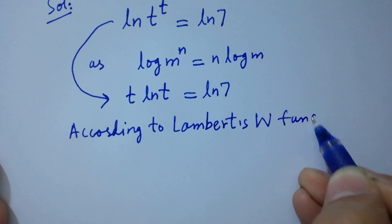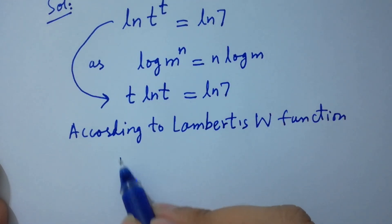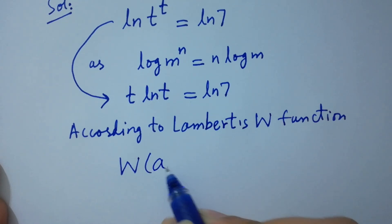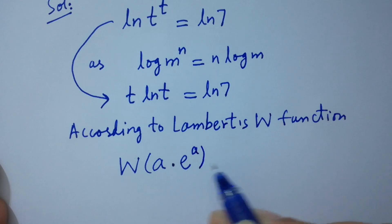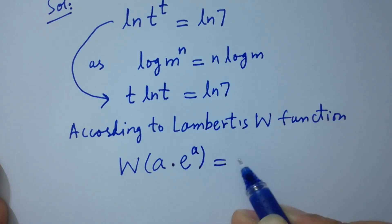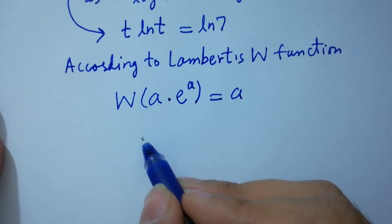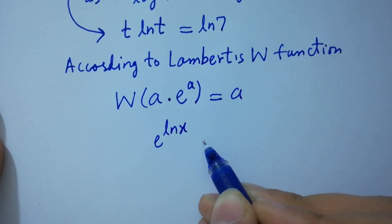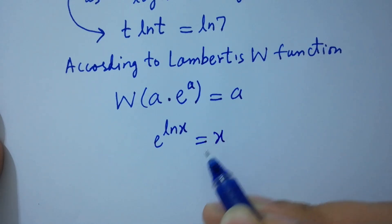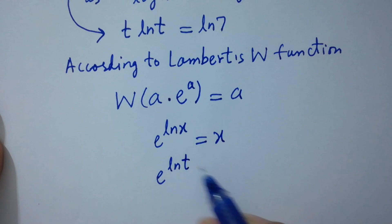Lambert's W function states that W(a · e^a) = a. And since e to the power ln x equals x, then e to the power ln t equals t.